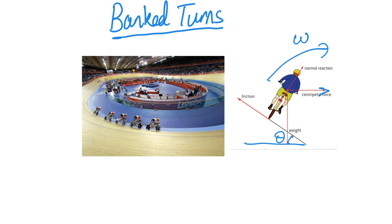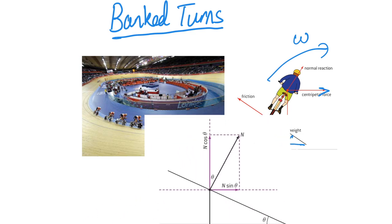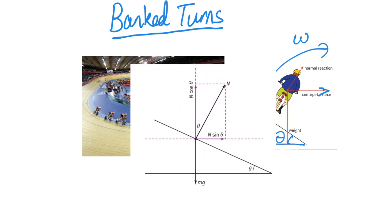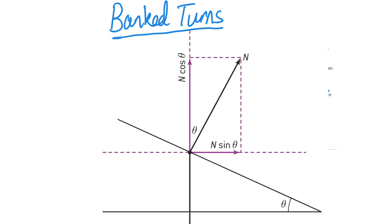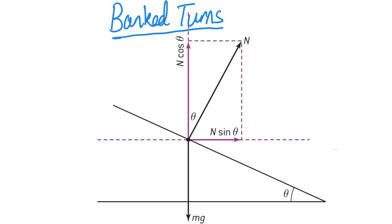So how does it make it easier? Why do the cyclists, cars, or planes not skid outwards? Let's zoom in so you can focus on the physics behind it. The cyclist or car is the object here. The object's weight is vertically downwards — mg. This is the normal reaction N, and this is the angle theta of that banked turn.